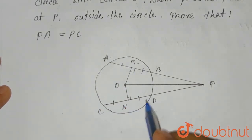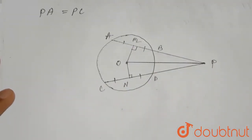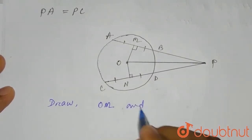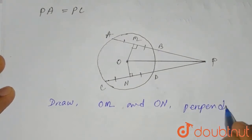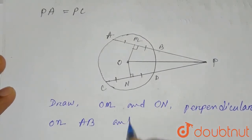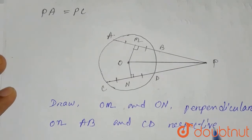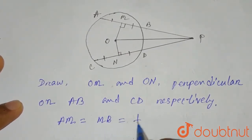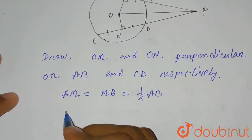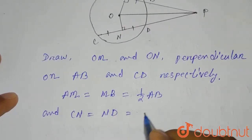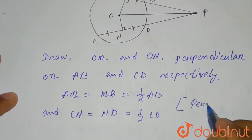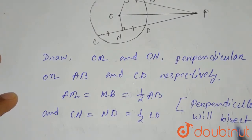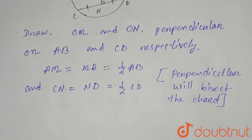If we draw OM perpendicular on AB and ON perpendicular on CD, we get that AM equals MB and CN equals ND, because a perpendicular from the center of a circle bisects the chord. So MB equals half of AB, and CN equals ND equals half of CD, because the perpendicular will bisect the chord.